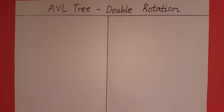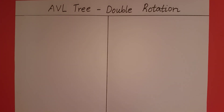In this video, we will take a look at what imbalances require a double rotation and how to perform the same. We are going to be continuing with the same assumptions as the previous video. Y is going to be the node at which the imbalance occurs, Z is going to be the parent of Y, and X is going to be the child of Y that causes the imbalance.